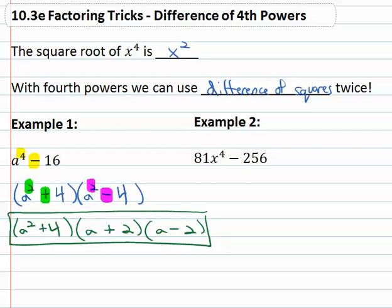We've used the difference of squares twice. We could check this by multiplying it out. Probably a good way to multiply it out would be to multiply the last ones first, because that's a sum and difference. We know we only have to do the first, that's a squared, and the last, that's negative four.